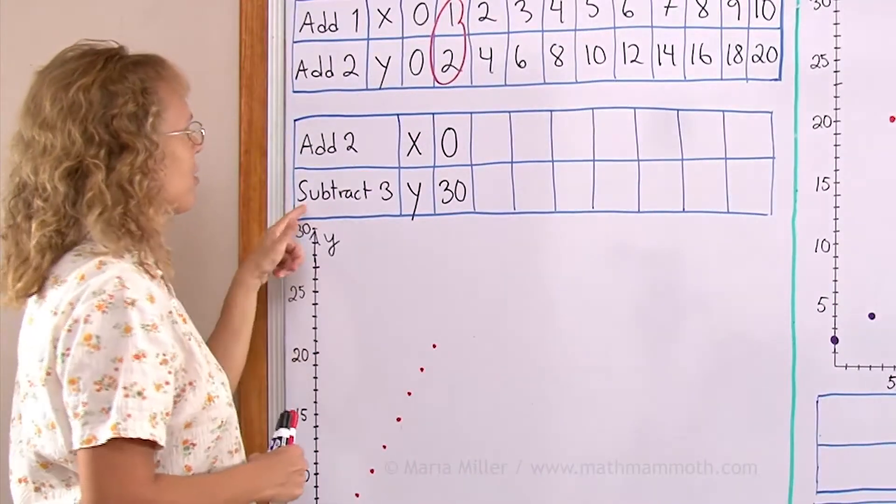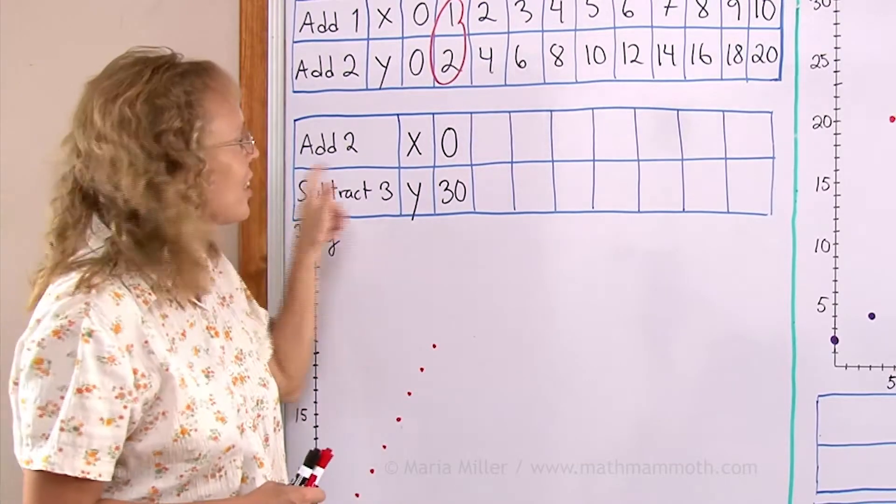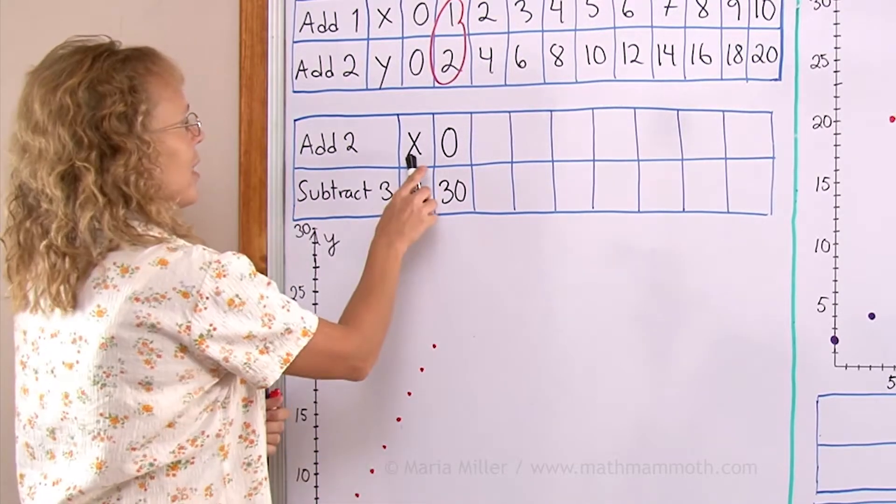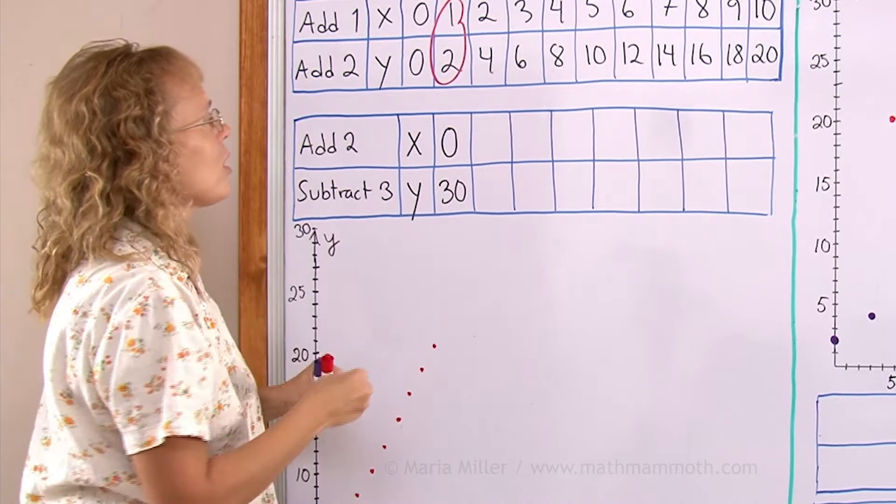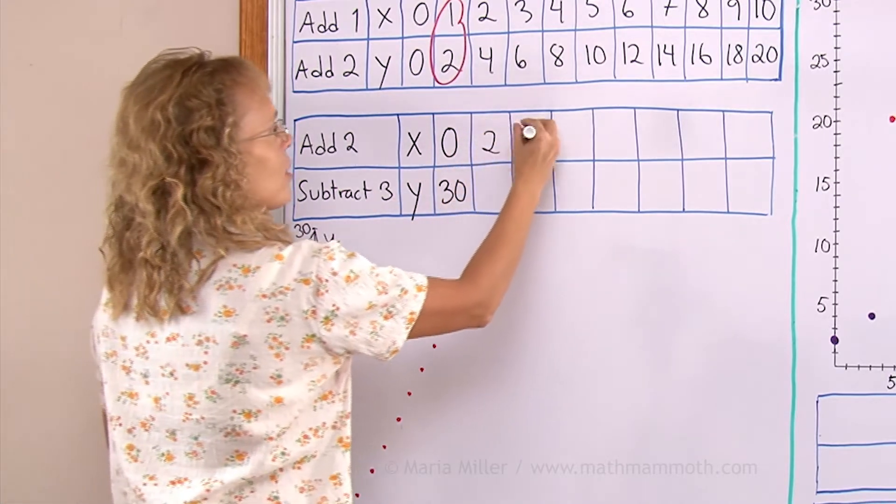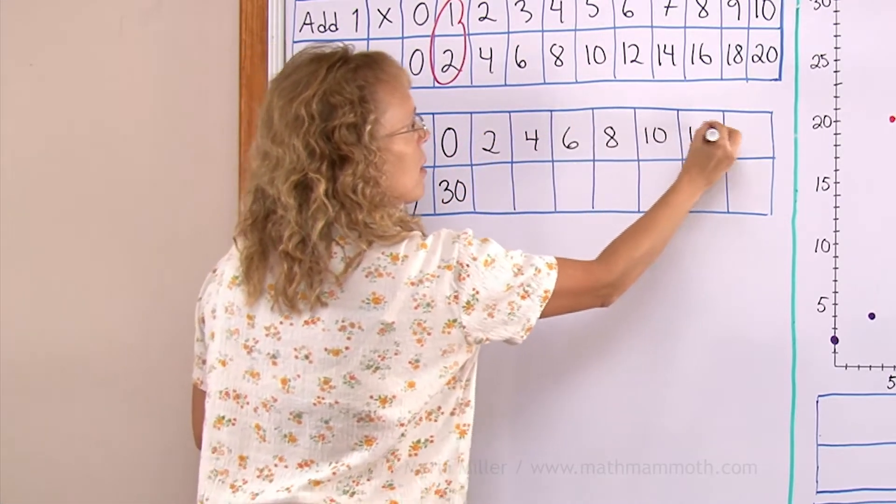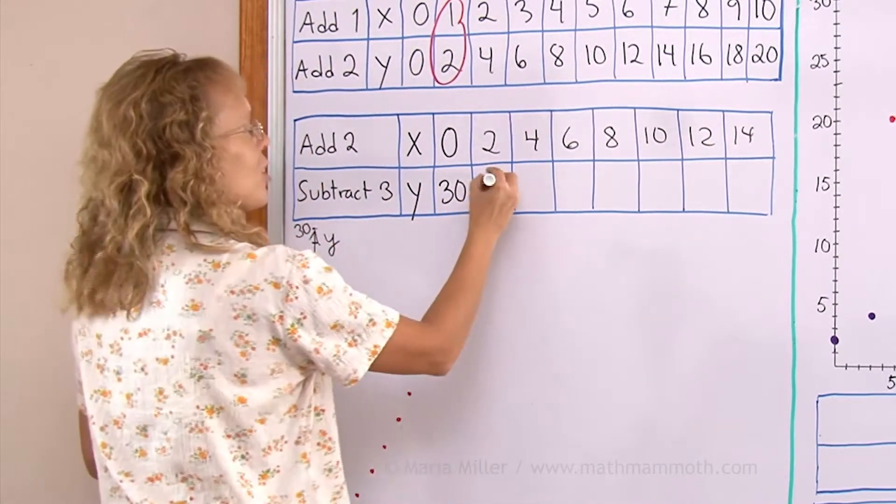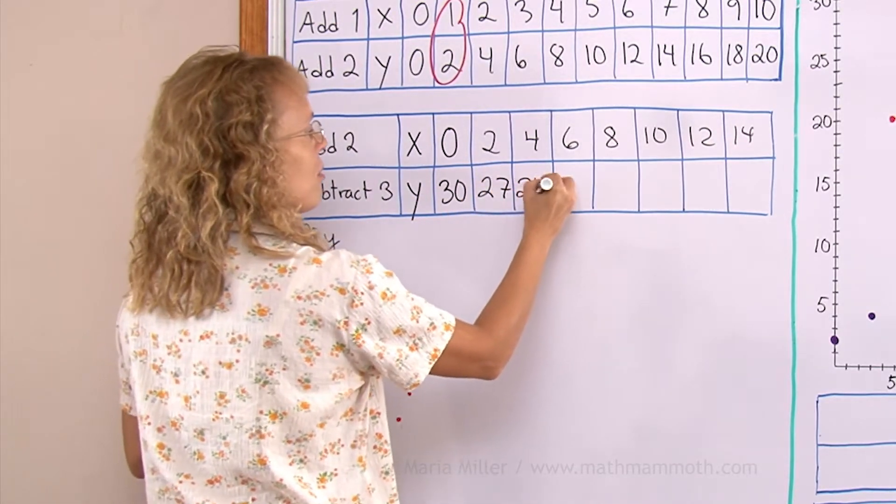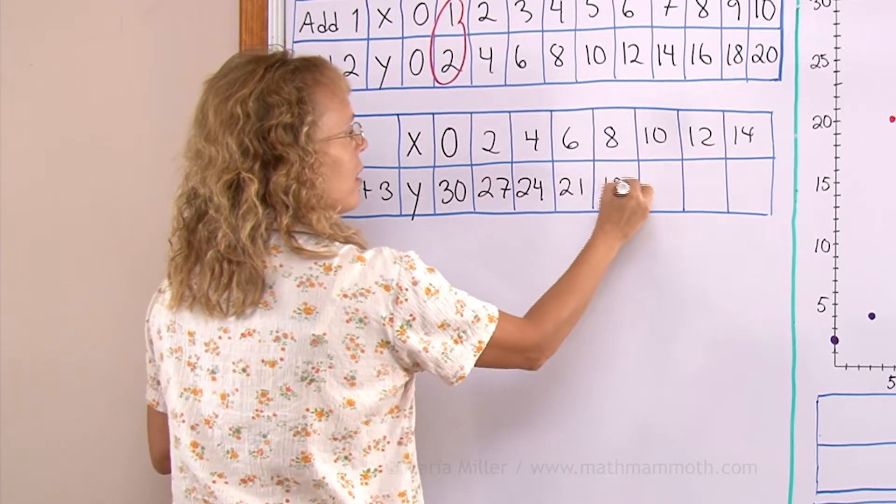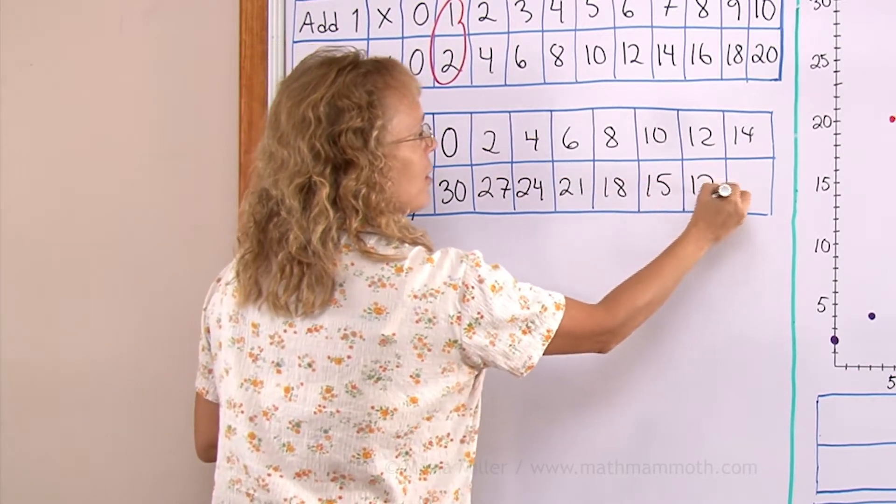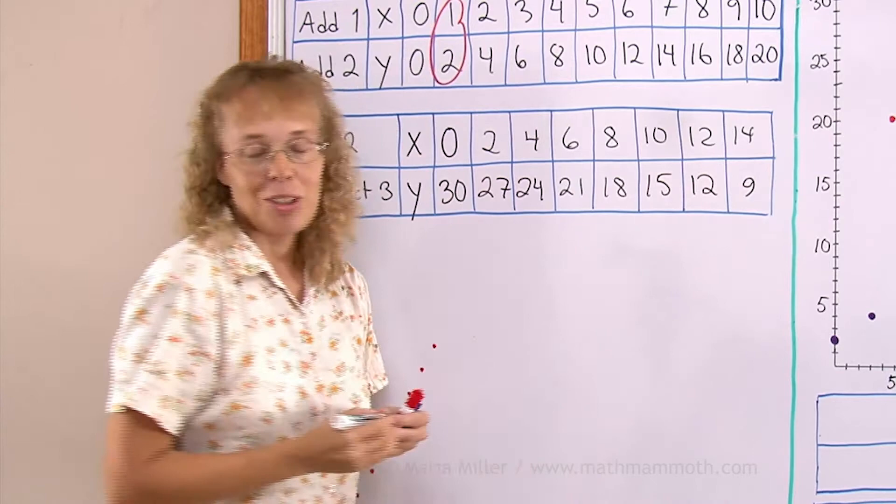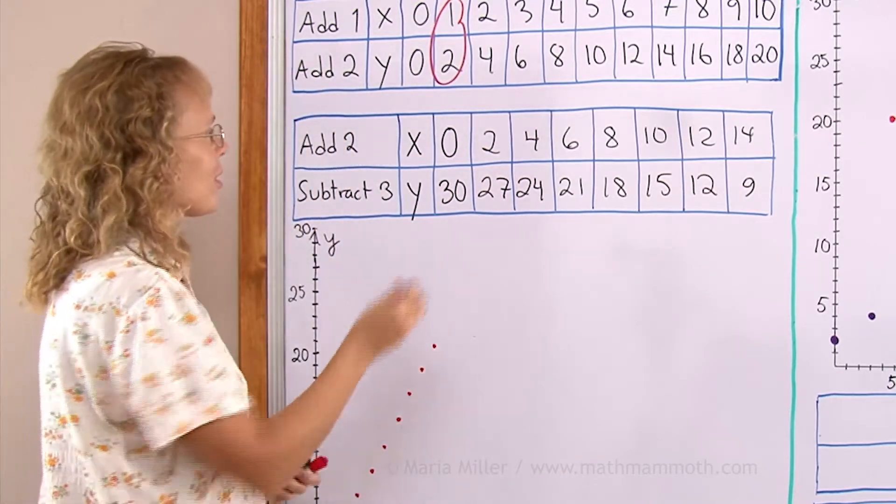Let's try something totally different where we subtract 3 each time. Here in X's let's add 2 each time and we will get the even numbers again. Here we subtract 3 starting from 30. So I would get 27, 24, 21, 18, 15, 12 and 9.